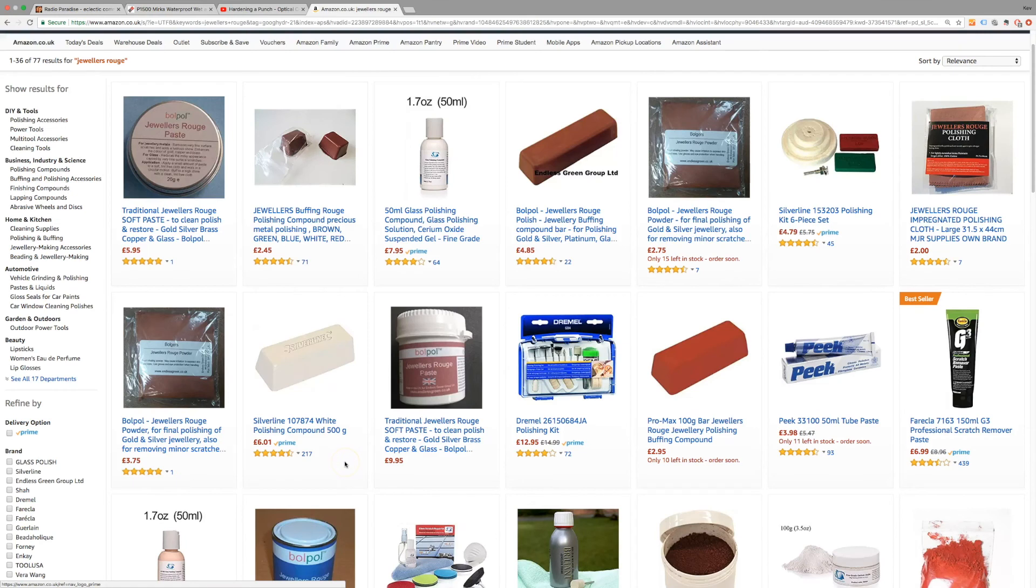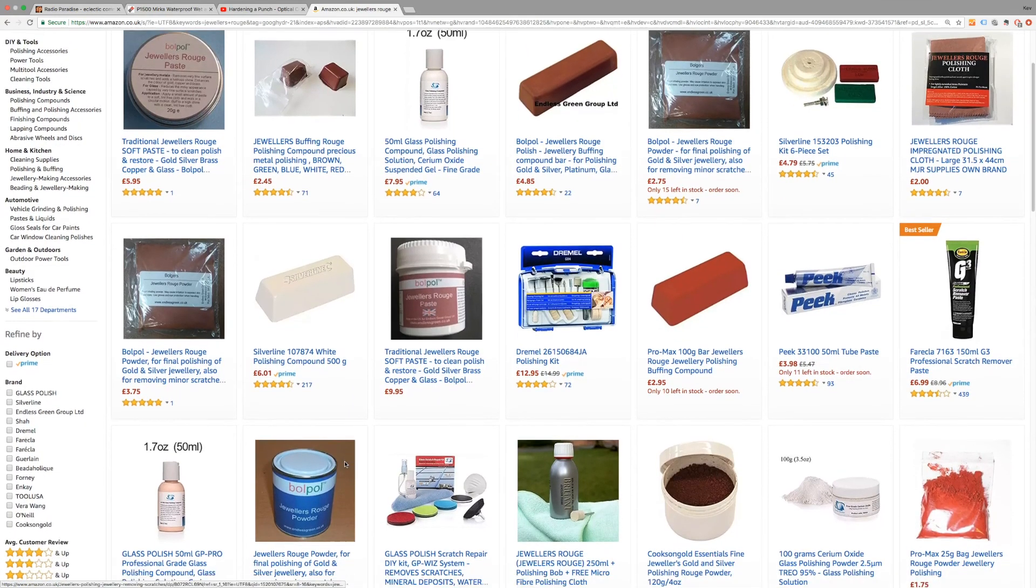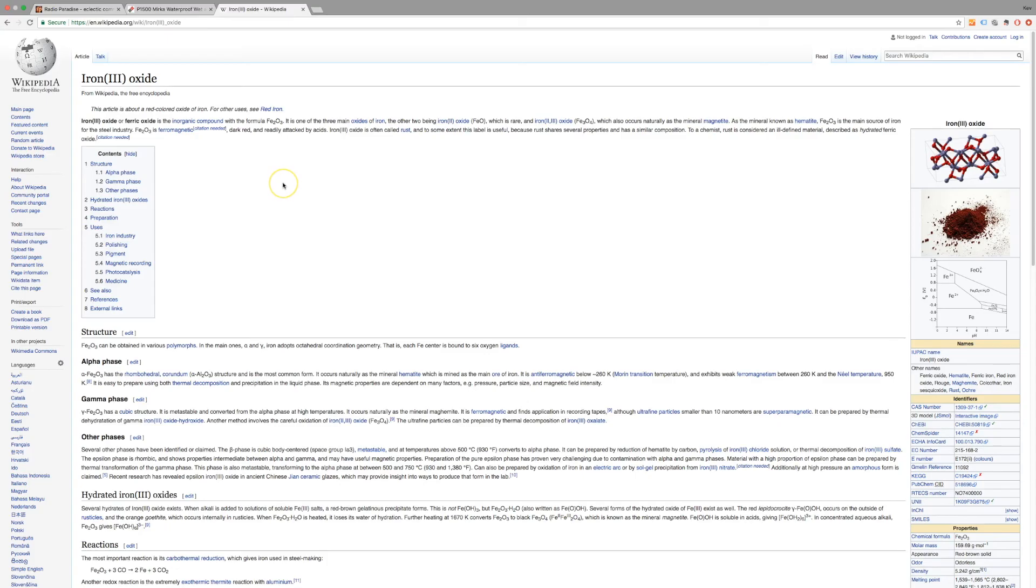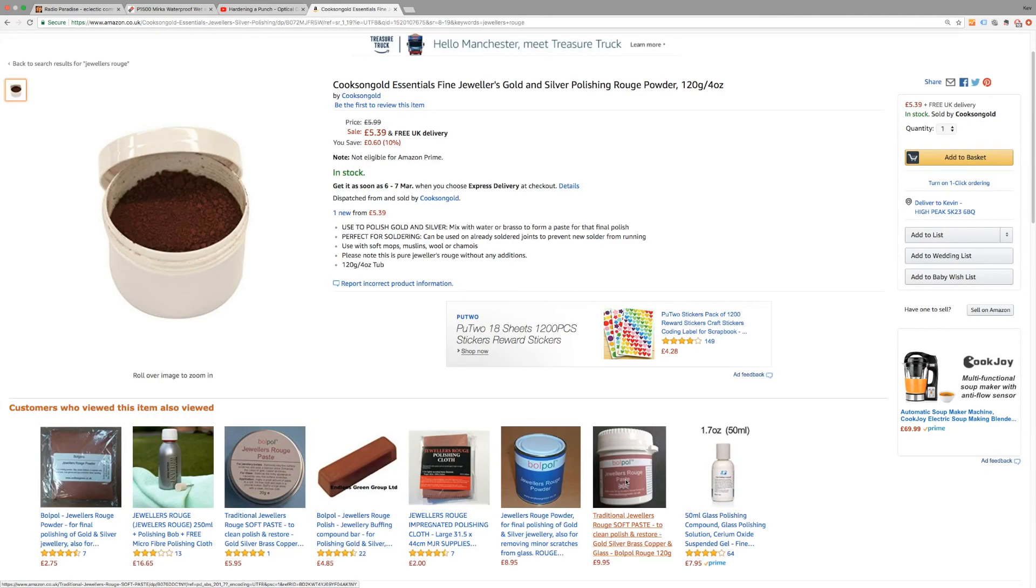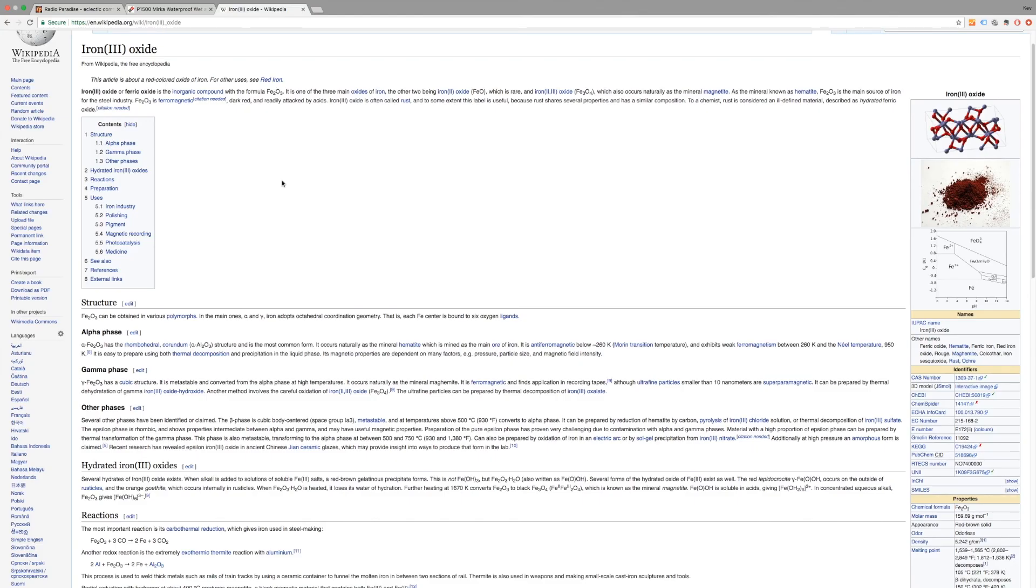But we went one step further and we used this stuff, Jewelers Rouge, which you can buy from Amazon. It's pretty inexpensive, but what that is is iron 3 oxide or ferric oxide. You dip it on the lens cloth—it's like the kind of thing that you get with the glasses—and you basically just put that final sheen on, and that's how you achieve the crazy optical finish that we managed to get.